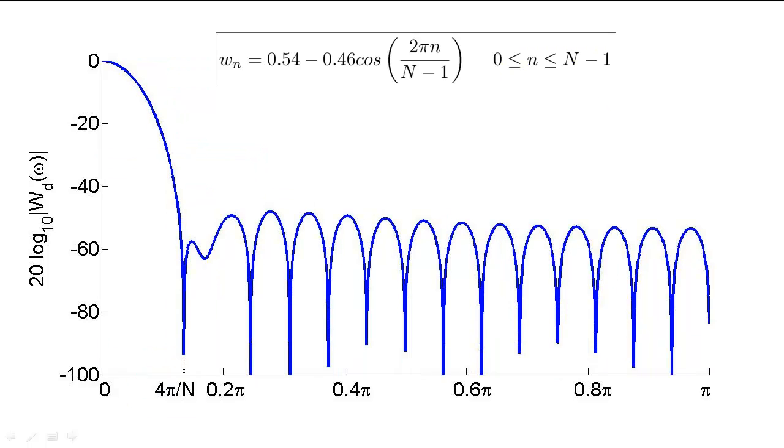A window function that finds a near ideal compromise between these two tradeoffs is the Hamming window. The Hamming window is essentially a cosine function that is raised by a DC offset. Since the Hamming window is a smooth function at all points, it further reduces the height of the side lobes, while very slightly increasing the width of the main lobe compared to the triangular window.